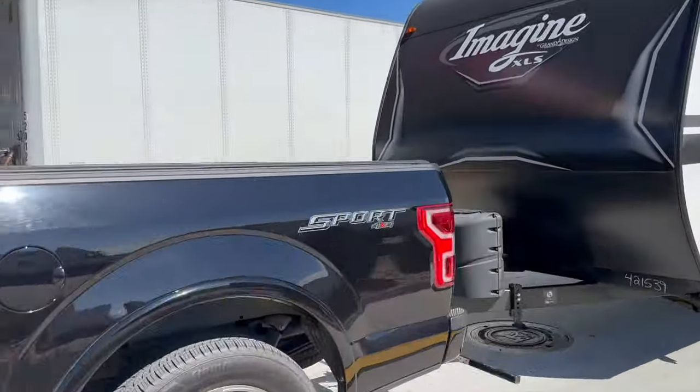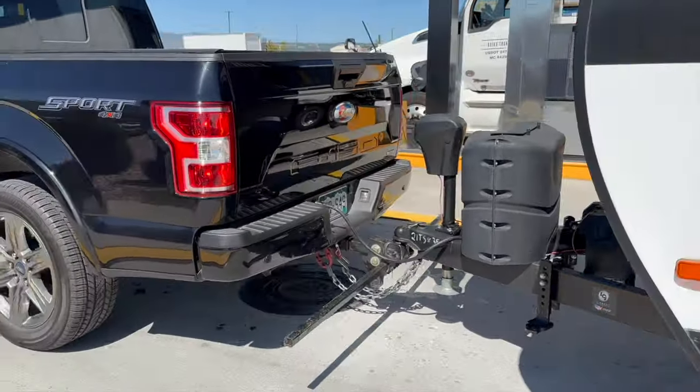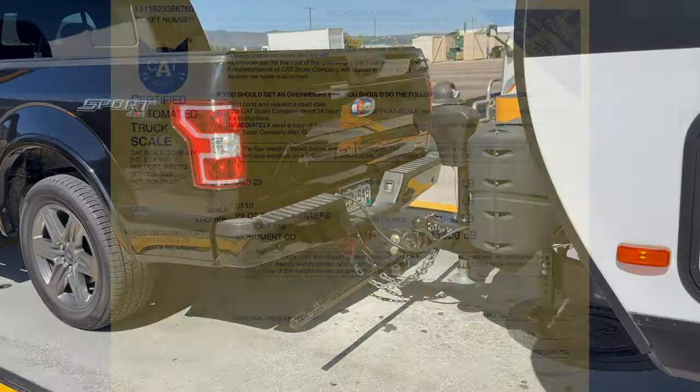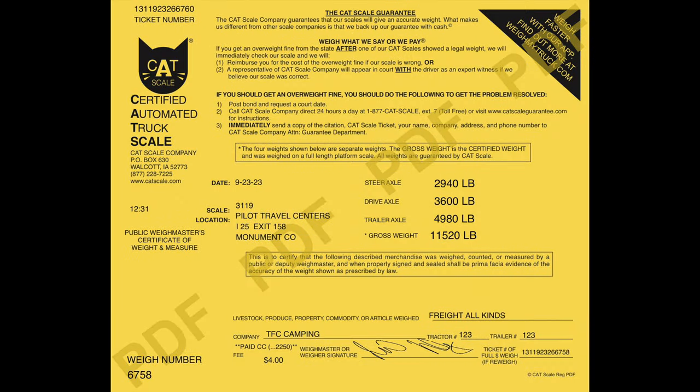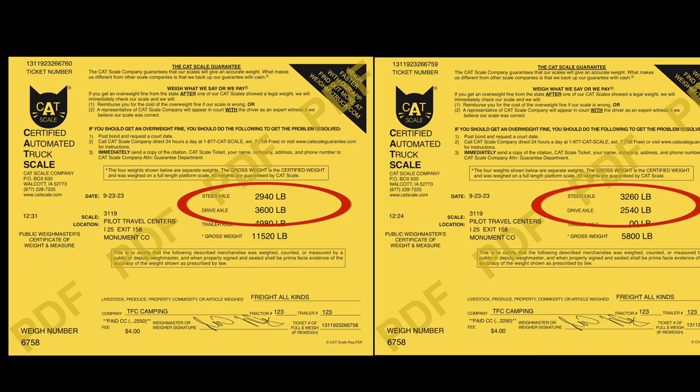Now it's time to compare both tickets. Take the one with your trailer attached and add up the steer axle weight and the drive axle weight, and compare that to the sum of the steer axle weight and the drive axle weight with just the truck. The difference between these two is your hitch weight.